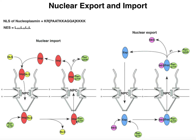Once importin and RAN-GTP move out into the cytoplasm, RAN is going to internally hydrolyze its GTP. RAN is also an enzyme because it's able to hydrolyze GTP, and when GTP is hydrolyzed to GDP, the RAN dissociates from the importin. Now importin is back out in the cytoplasm where it can freely accept another protein with another nuclear localization sequence.